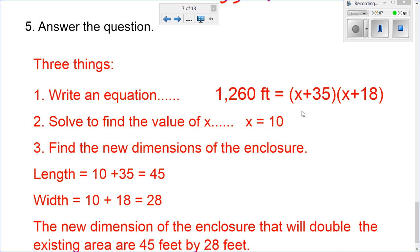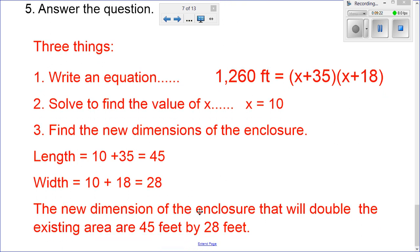Okay, so if we take x is 10, we plug it back into the dimensions. We have a length of 10 plus 35, or 45 feet. We have a width of 10 plus 18, which equals 28 feet. So we can say the new dimensions of the enclosure that will double the existing area are 45 feet by 28 feet.